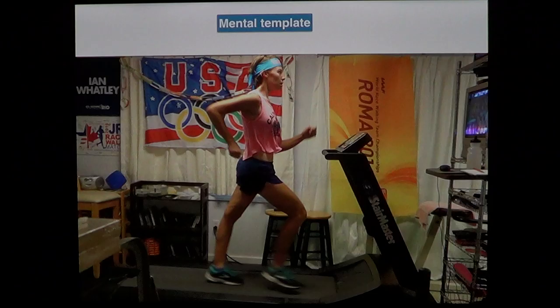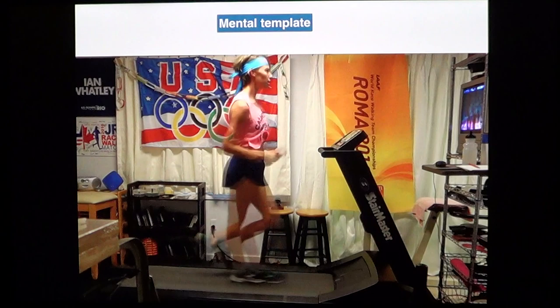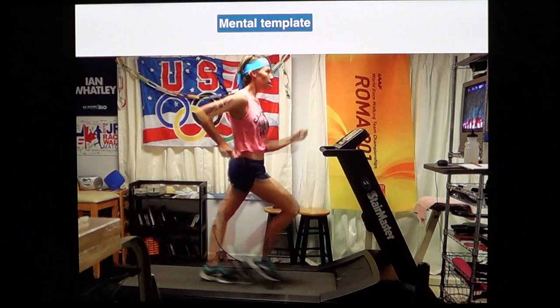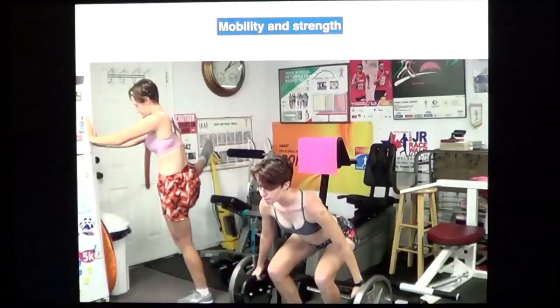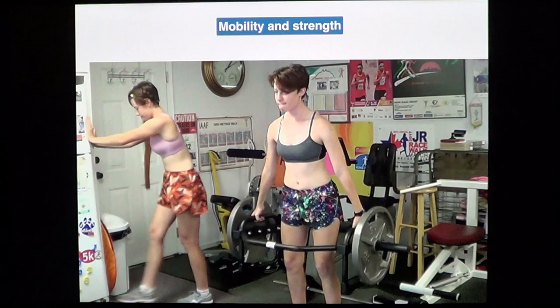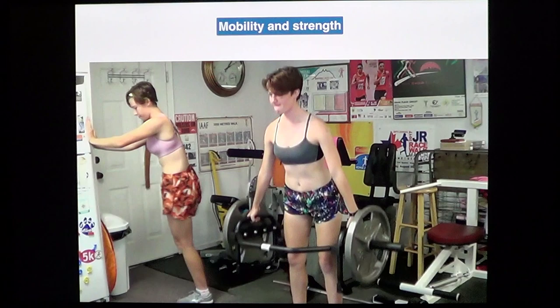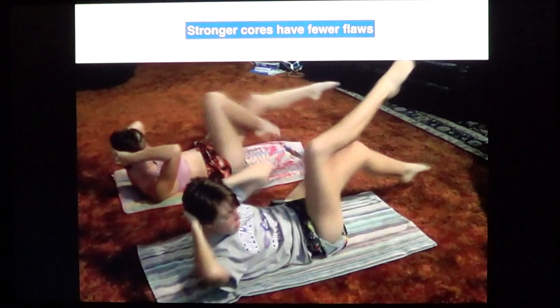We start by giving them a mental template — we show them an athlete of similar build and get them to focus on their form until they can mentally recreate it when they're out training. To really be able to perform race walking, you need to be mobile with dynamic and static stretching, and also strong with weight work. It's also important to have a very strong core, and that will prevent some of the flaws we're going to see later on.